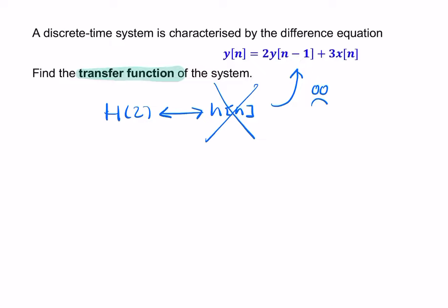But what we can do is somehow rewrite y in terms of x, because another expression for h of z is the ratio of y of z over x of z. So if somehow we can get our difference equation in that form, then we can find the transfer function.